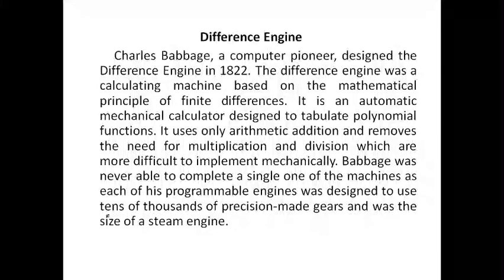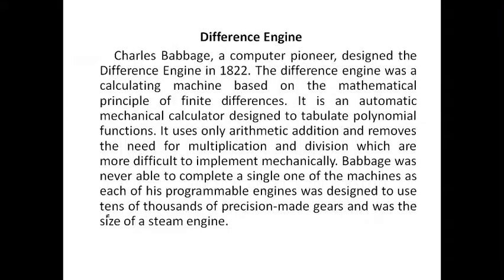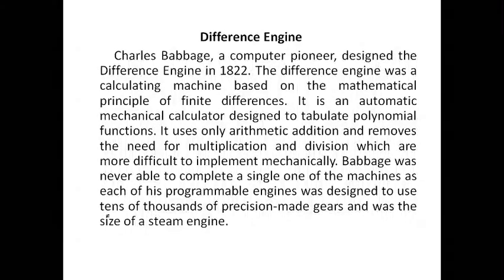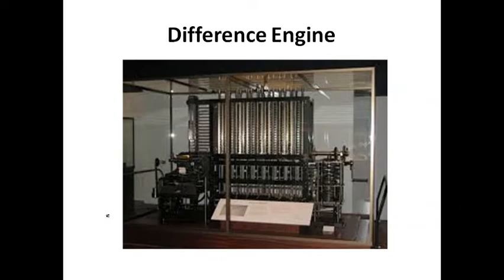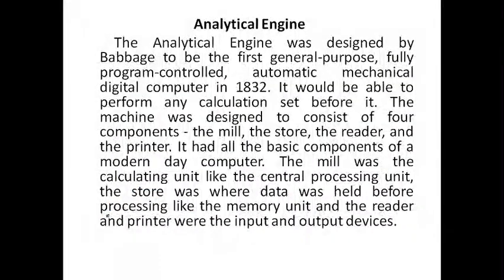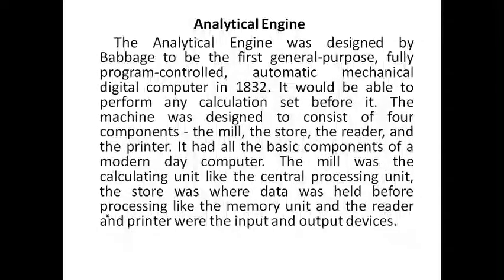Charles Babbage developed a machine in 1822, funded by the British government, called the Difference Engine. This machine had gears and components operated mechanically. You can see an image of this machine. After the Difference Engine, in 1833, Charles Babbage developed the Analytical Engine.